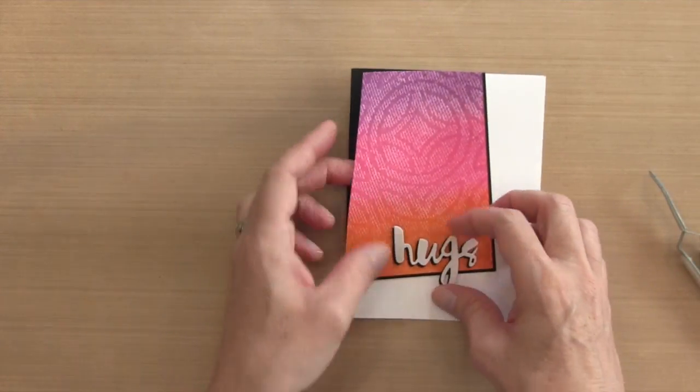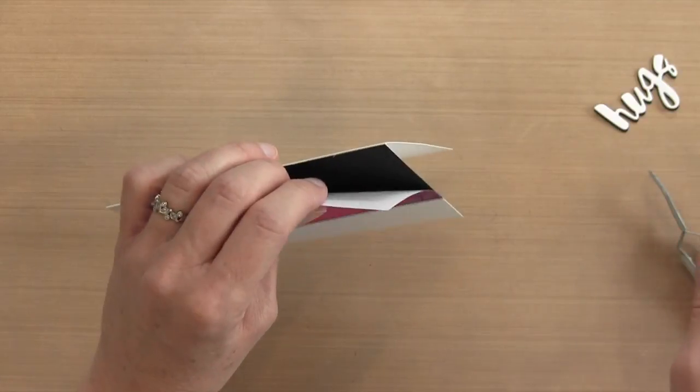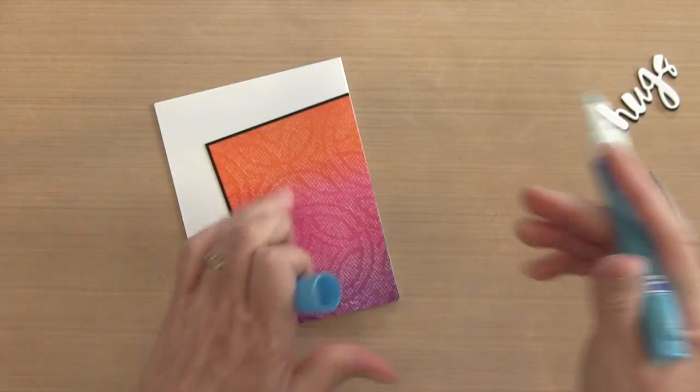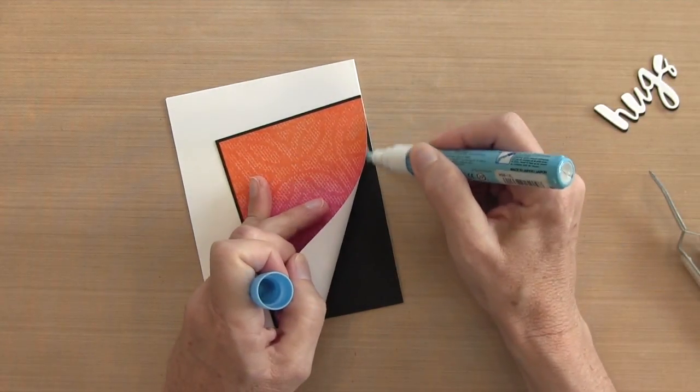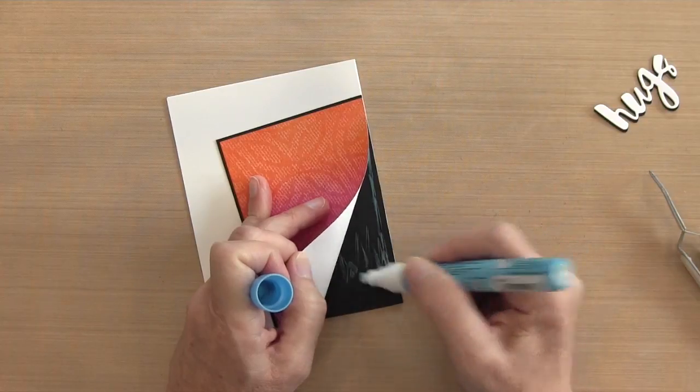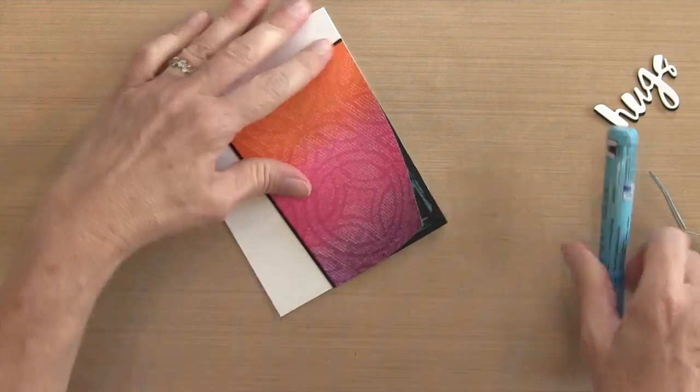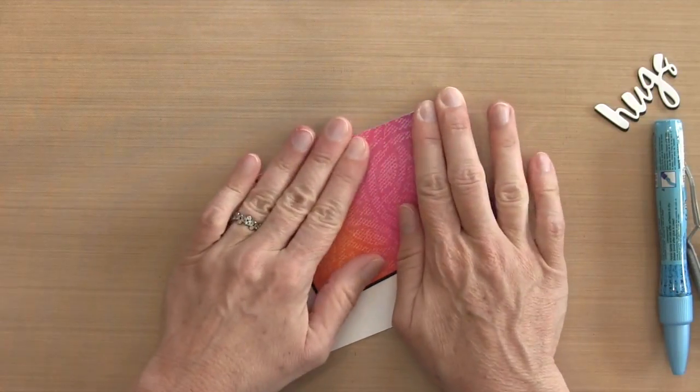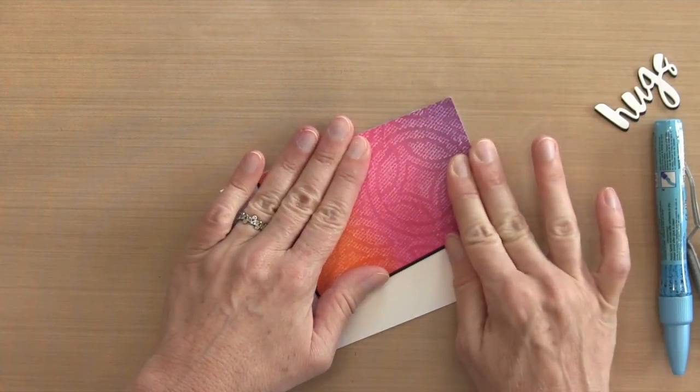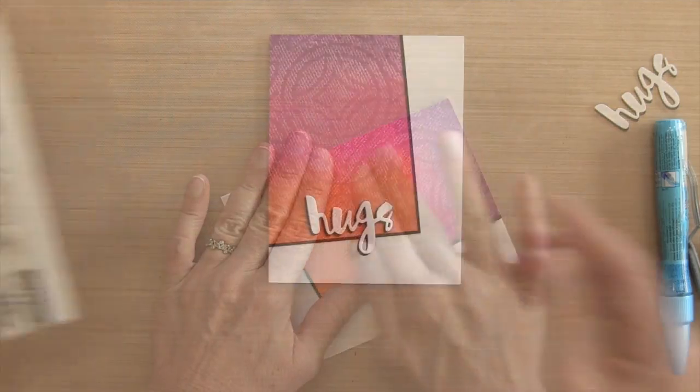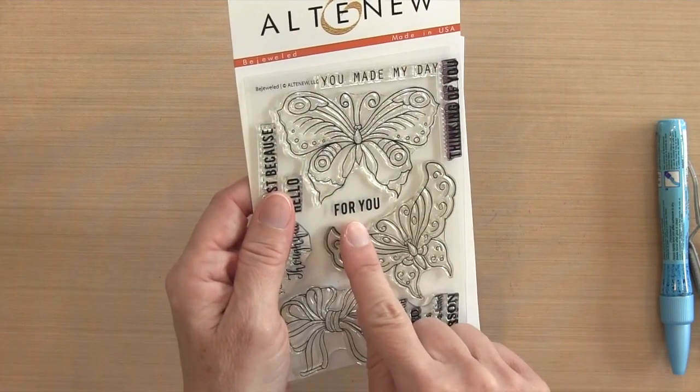So I realized that I don't have tape runner behind my panel here, so it's hard to get tape runner inside there. So I'm just going to grab my two-way glue pen and just draw a bunch of it inside there and press it down. And this glue pen works great—you're going to see me use it all the time in this video. It's just a great adhesive to have on hand.